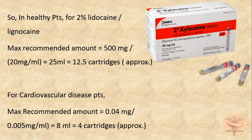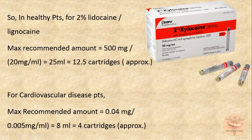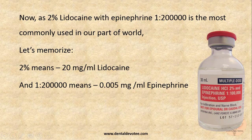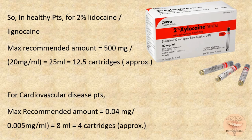25 ml equals approximately 12.5 cartridges. Dental cartridges usually contain 1.8 ml in the USA and France, 2.2 ml in the UK and Australia, and 2 ml in India and some other parts of the world. For cardiovascular disease patients, the dose is limited by epinephrine: the maximum recommended amount is 0.04 mg divided by 0.005 mg per ml — that comes to 8 ml, which is approximately 4 cartridges.